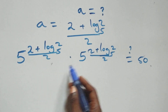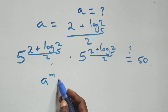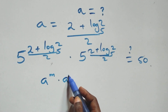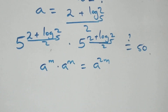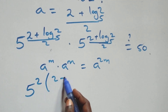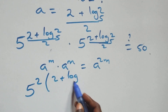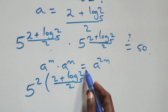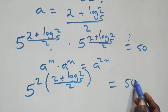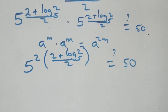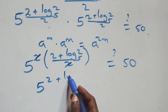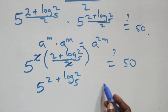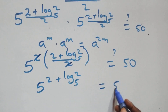We have the same base multiplying. When we have a raised to power m, times a raised to power m, this is the same as a raised to power m plus m, that's 2m. So we rewrite this as 5 raised to power 2 times (2 plus log base 2 of 5) all over 2, equals 50. The 2s cancel each other, and we have 5 raised to power (2 plus log base 2 of 5) equals 50.